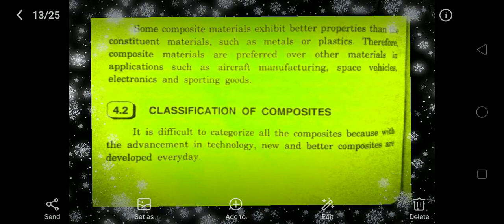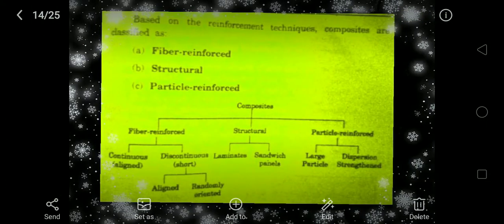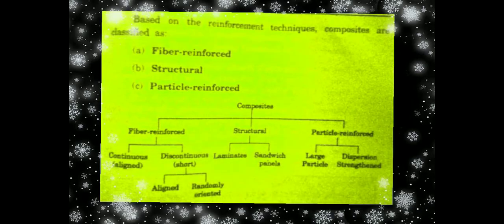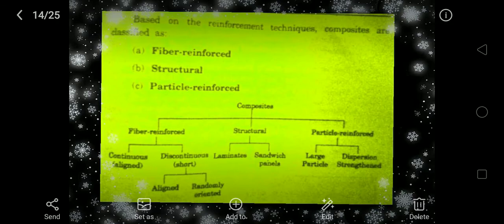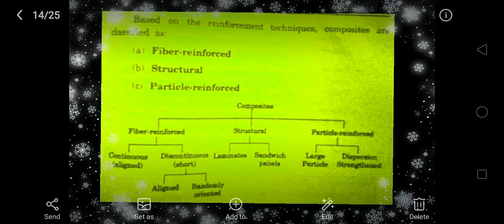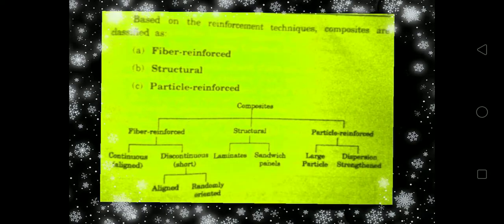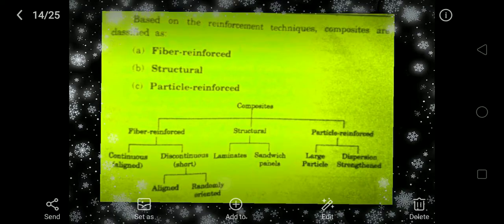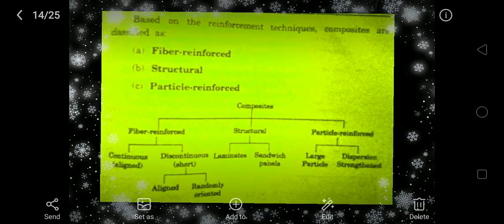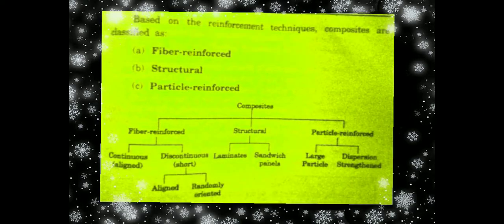The classification of composites is based on the reinforcement technique. Composites are classified as fiber reinforced, structural, and particle reinforced. Fiber reinforced composites have continuous and discontinuous types. Structural composites include laminates and sandwich panels. Particle reinforced composites include large particle and dispersion strengthened types.